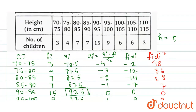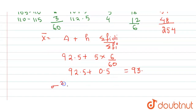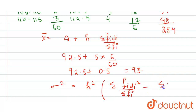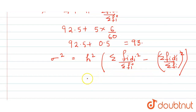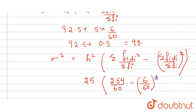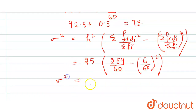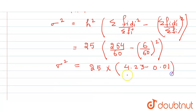Now we find variance and standard deviation. The formula for variance σ² = h² × [(Σfᵢdᵢ²/Σfᵢ) − (Σfᵢdᵢ/Σfᵢ)²]. Putting in values: h² = 25, so σ² = 25 × [(254/60) − (6/60)²] = 25 × [4.23 − 0.01] = 25 × 4.22 = 105.5. Therefore the variance is 105.5.